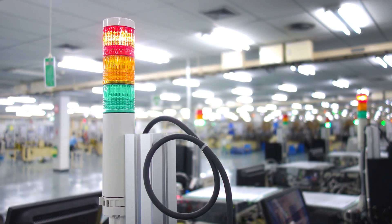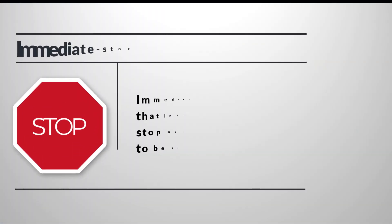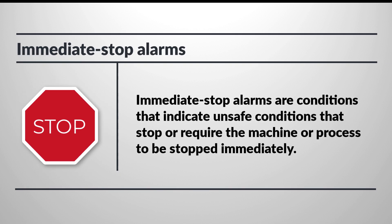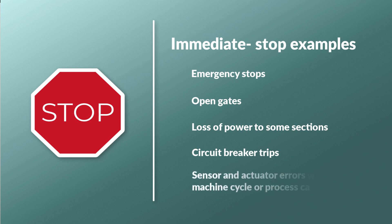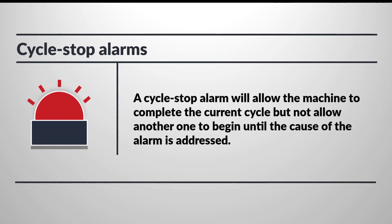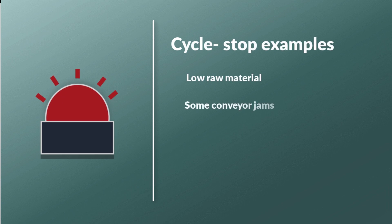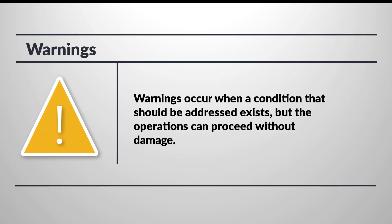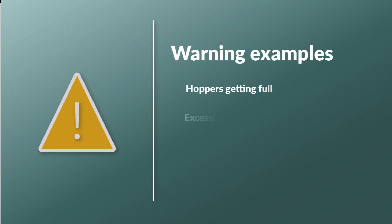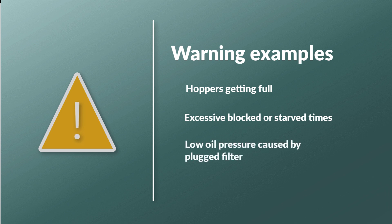Alarm indication is important in HMIs and is generally broken down into at least three categories. Immediate stop alarms indicate unsafe conditions that stop or require the machine or process to be stopped immediately. Examples include emergency stops, open gates, loss of power to some sections, circuit breaker trips, or sensor and actuator errors where the machine cycle cannot complete. A cycle stop alarm will allow the machine to complete the current cycle but not allow another one to begin until the cause is addressed — examples include low raw material, some conveyor jams, motors starting to overheat, or specific operations taking slightly longer than expected. Warnings occur when a condition that should be addressed exists but operations can proceed without damage — hoppers getting full, excessive blocked or starved times, or low oil pressures caused by plugged filters are examples.